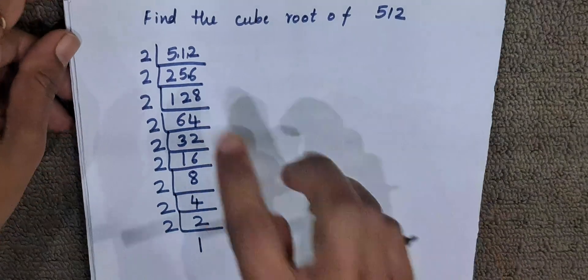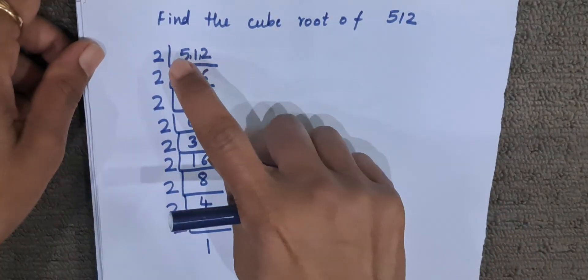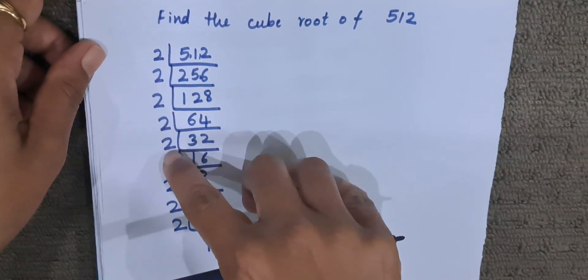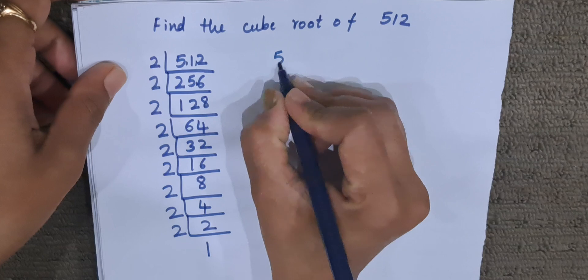Okay, now how many 2s are there? How many 2s are the factors of 512? We will see 1, 2, 3, 4, 5, 6, 7, 8, 9. There are 9 twos which are factors of 512.